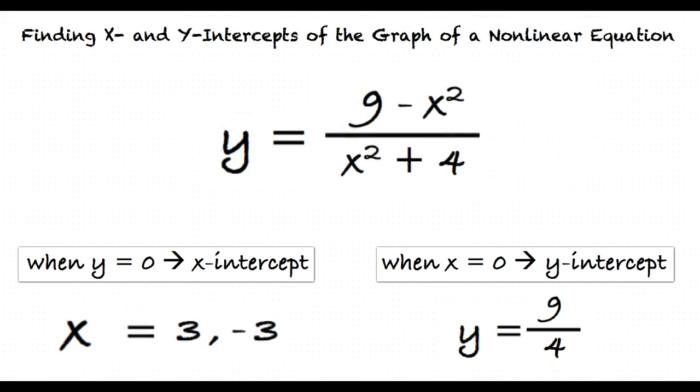This makes more sense now. Let me summarize what we've learned. To find the y-intercepts, substitute 0 for x and solve the equation for y. To find the x-intercepts, substitute 0 for y and solve the equation for x.